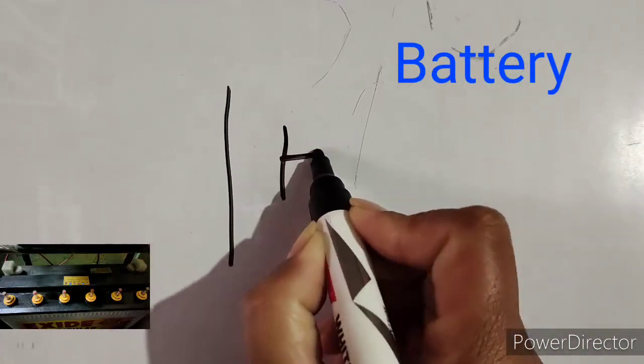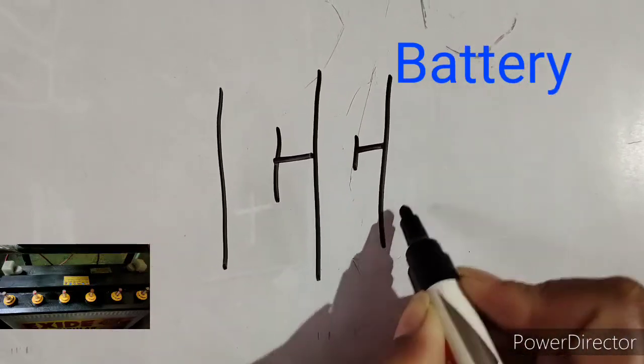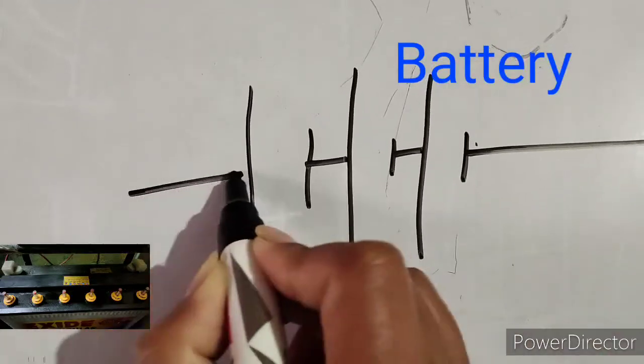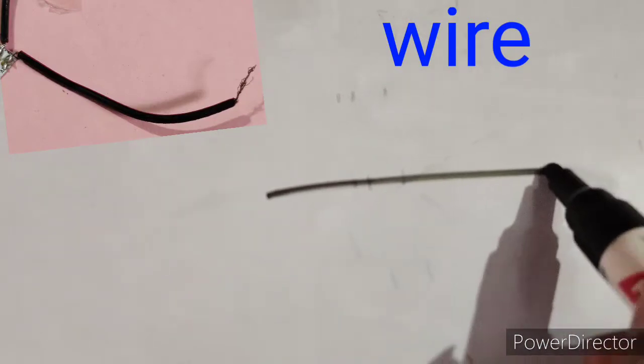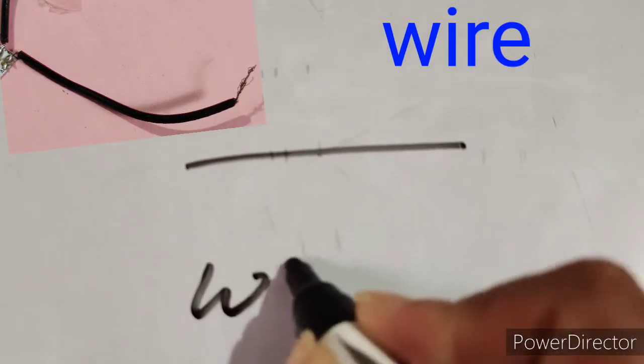This is the symbol of battery. The long line represents the positive terminal and the small line represents the negative terminal. This is the symbol of wire.